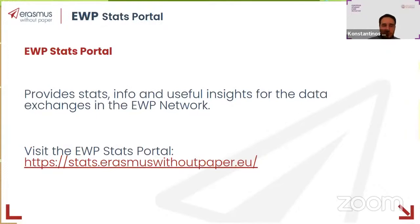The EWP Stats Portal provides stats, information, and useful insights for data exchanges in the EWP network. Its URL is stats.erasmuswithoutpaper.eu. It should be very interesting from an IRO perspective. I don't know if I have some time to actually go and browse the stats portal and showcase some of its functionality — David, I think I'll go for it.